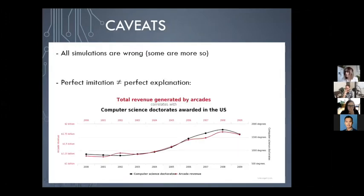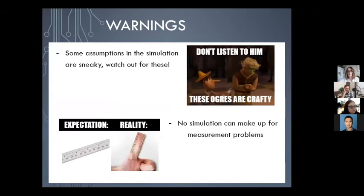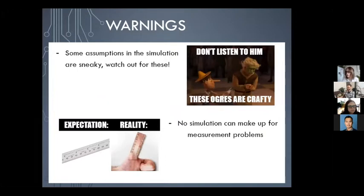Some caveats: all simulations are wrong and some are more so, to paraphrase George Box. We're never going to get things perfectly right. Also, perfect imitation doesn't mean perfect explanation — I could do a really good job predicting one variable using observations of another, but that doesn't mean I've learned anything about the data-generating process. I can have predictive validity without necessarily having theoretical validity.